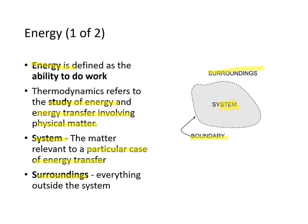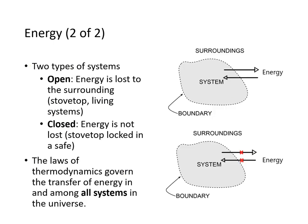There are two types of systems: open systems and closed systems. In open systems, energy is lost to the surroundings freely — it allows free movement of energy between the system and surroundings. Examples include a stovetop where energy is released into surroundings, and living systems — we are also open systems. In closed systems, energy is not lost; imagine a stovetop locked in a thermally insulated safe.